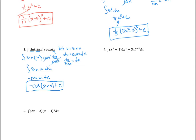You can always check your work by taking the derivative. Taking the derivative of negative cosine of sine of x: the derivative of cosine is negative sine, giving negative sine of sine x. Then by the chain rule, we multiply by cosine x. The two negatives make a positive, so we get sine of sine x times cosine x — which matches what we had originally. So we know we've done this correctly.